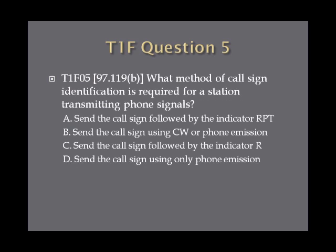Question five. What method of call sign identification is required for a station transmitting phone signals? A, send the call sign followed by the indicator RPT. B, send the call sign using CW or phone emission. C, send the call sign followed by the indicator R. D, send the call sign using only phone emission.